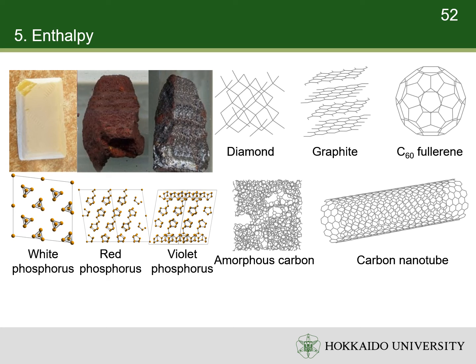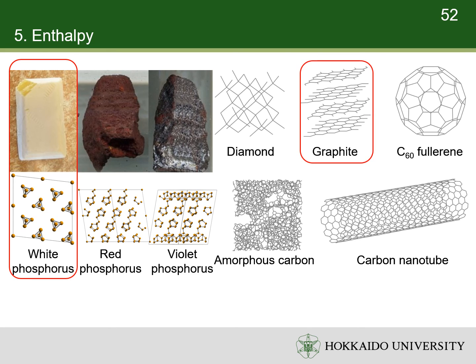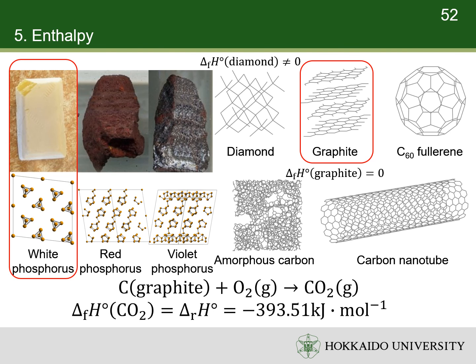For example, phosphorus and carbon have a few allotropes. The most stable allotrope of phosphorus under standard conditions is white phosphorus, and the most stable allotrope of carbon is graphite. So the standard enthalpy of formation of graphite is zero, while that of diamond is not zero. The standard enthalpy of formation of carbon dioxide is the standard enthalpy of reaction from carbon as graphite and oxygen in gas state to carbon dioxide in gas state.